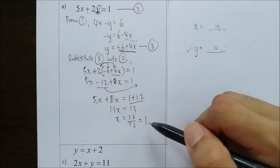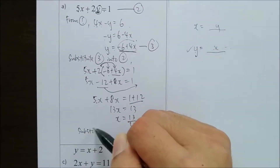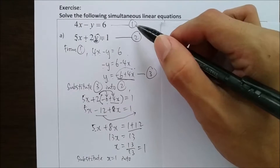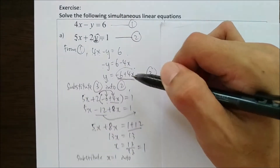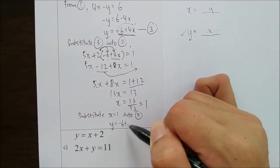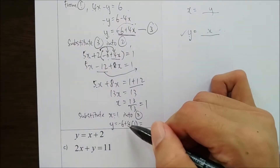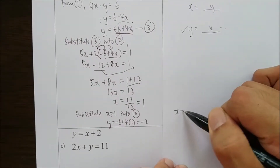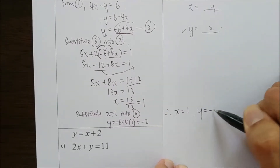But we are not done yet because we still need to find y. We substitute x equals 1 into any of the equations. The easiest one is equation 3, because substituting 1 gives us the value directly. So y equals negative 6 plus 4 times 1, which gives negative 6 plus 4 equals negative 2. So we rewrite the answer: x equals 1, y equals negative 2.